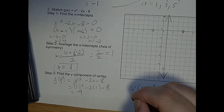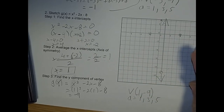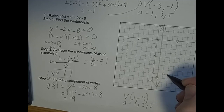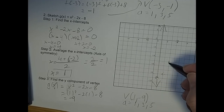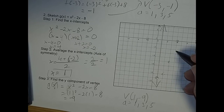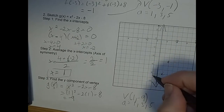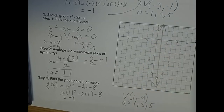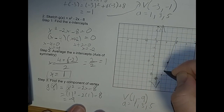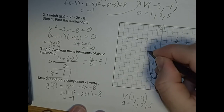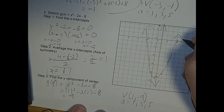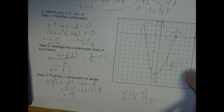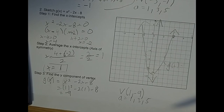The coefficient a is still 1, so the step pattern is the same: 1, 3, 5. From the vertex at (1, negative 9), go over 1 up 1, over 1 up 3, over 1 up 5, and mirror on the other side. Connect the points and draw a smooth curve through all of them. There's g(x) equals x squared minus 2x minus 8 graphed on the x-y plane, with the axis of symmetry shown.